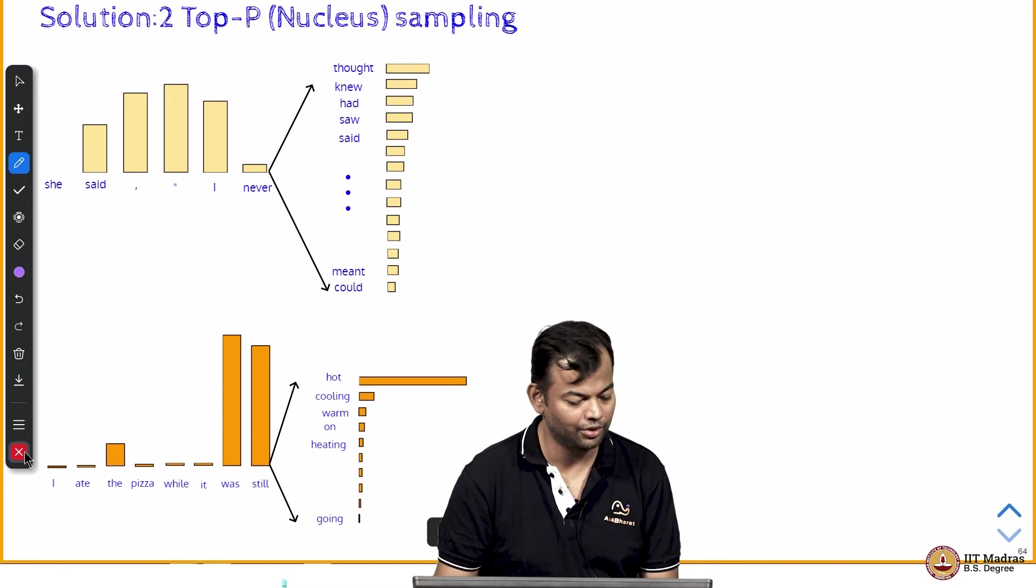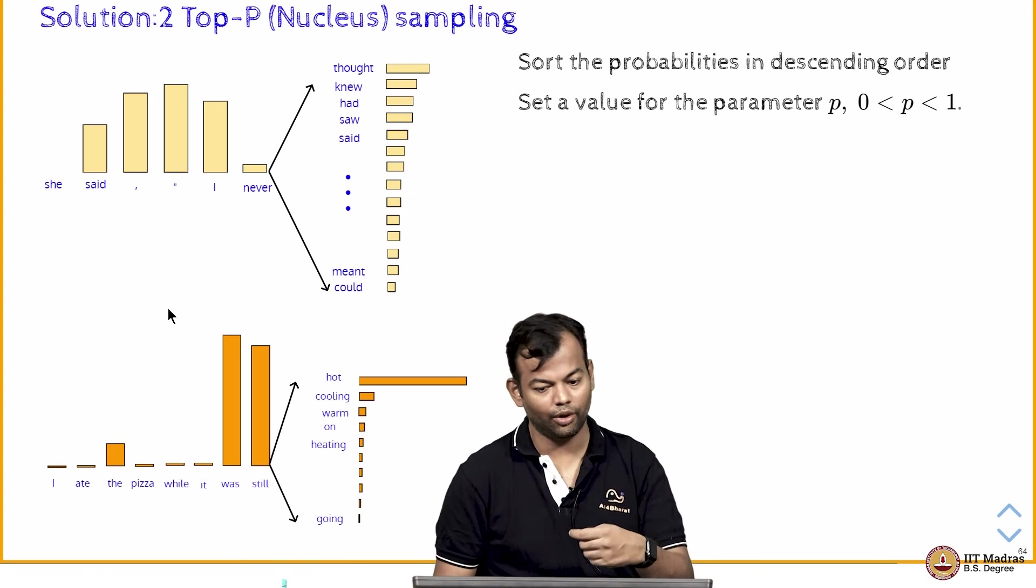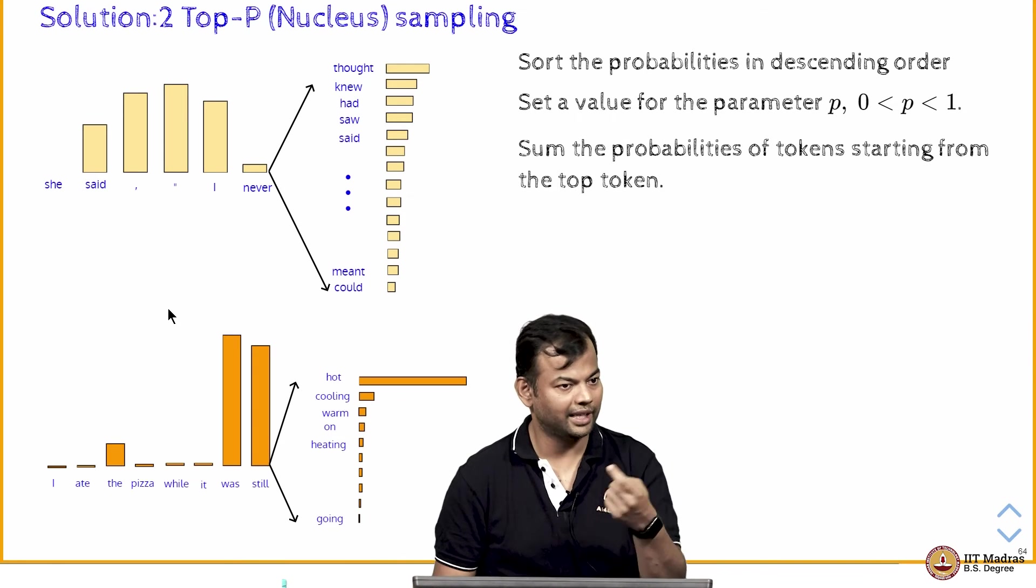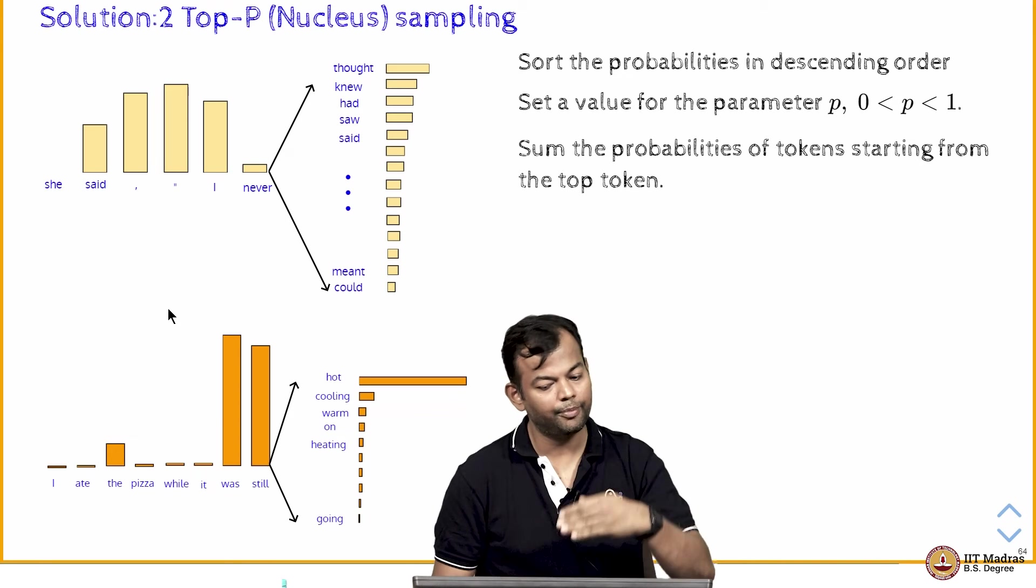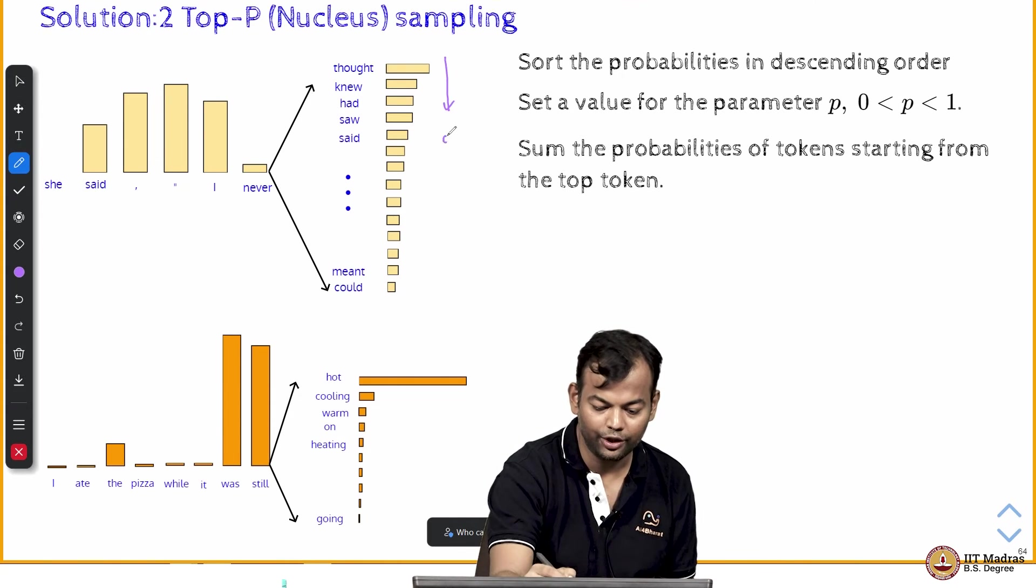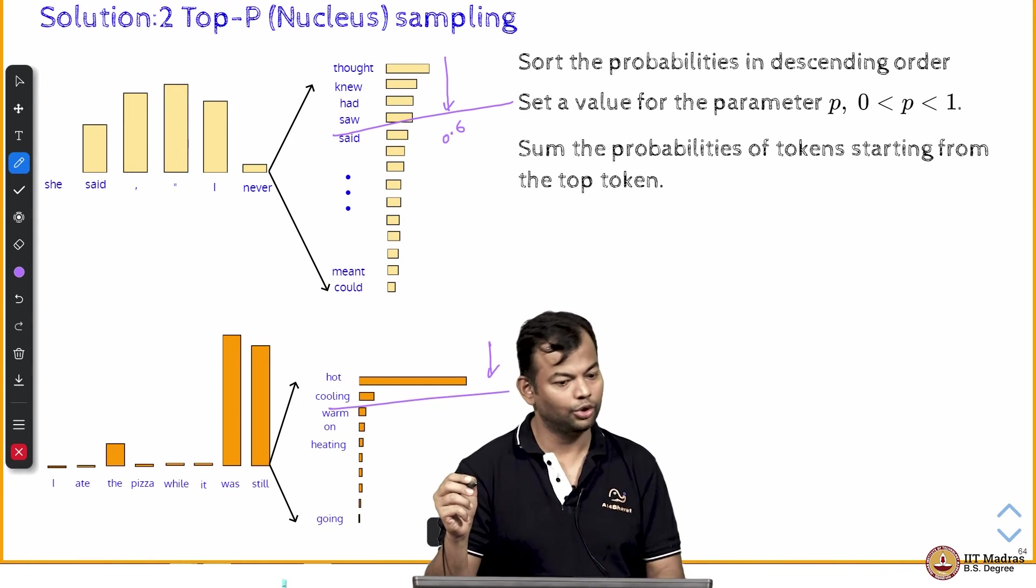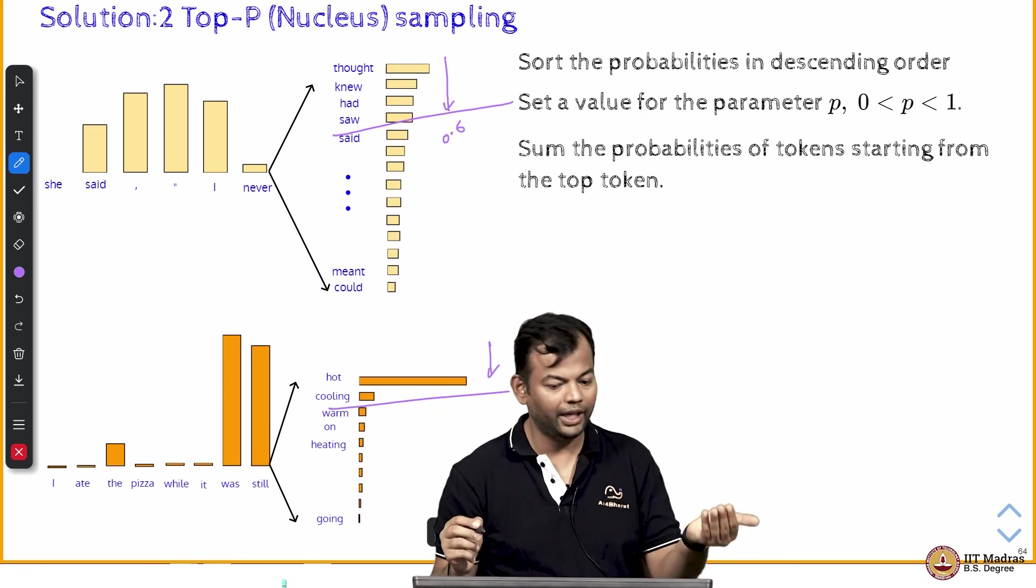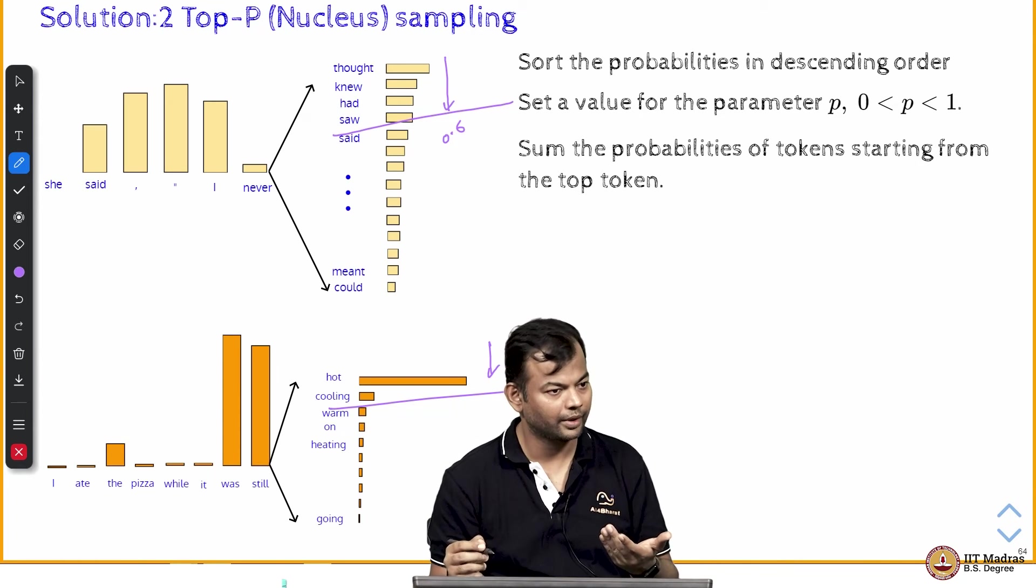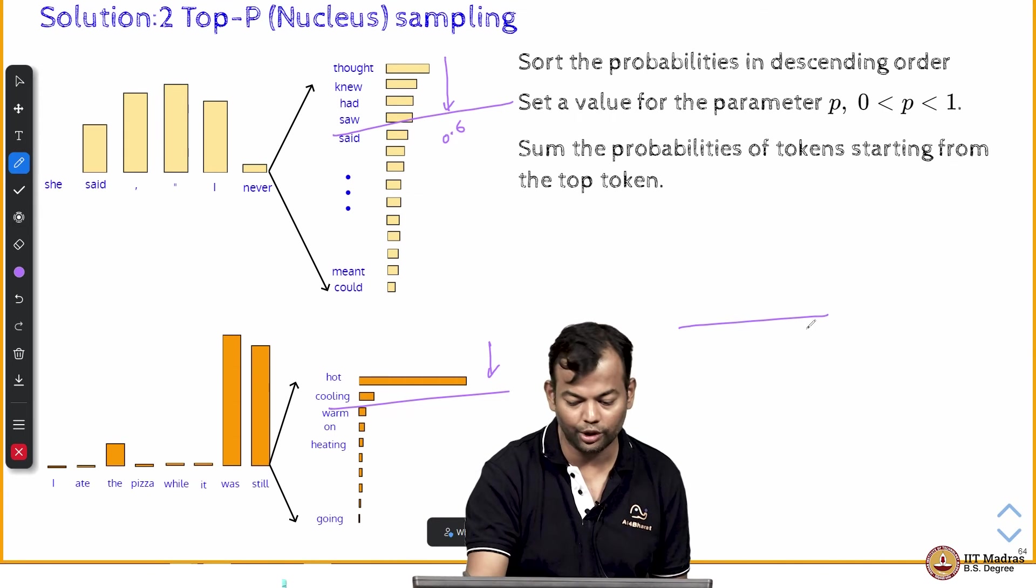The rest of the procedure remains same. So, you just have a dynamic value of K now. Sort the probabilities in descending order, set a value for the parameter P between 0 to 1, as I was taking the example of P is equal to 0.6. Sum the probabilities of tokens starting from the top, so keep summing up and whenever you reach 0.6 you draw the line there. So, those are the tokens that you are going to consider and depending on the nature of the distribution, more or less tokens will get added. And now the rest of the process remains the same. In this case only two tokens got added, so you are going to normalize that.